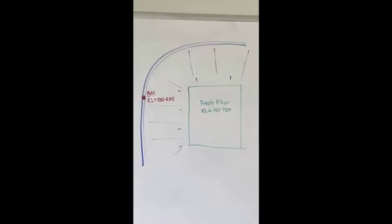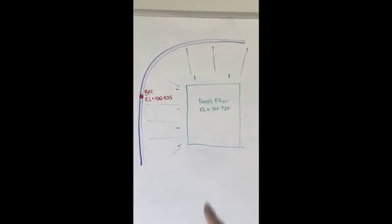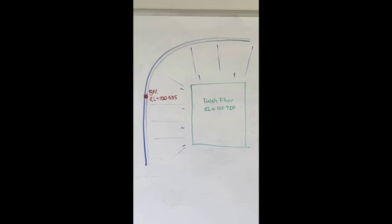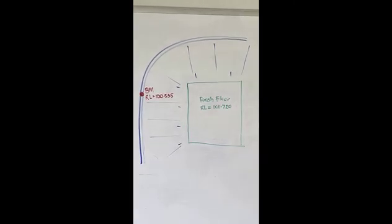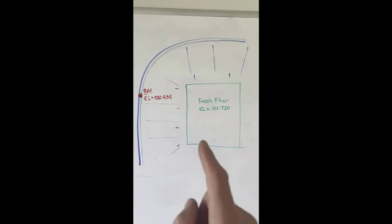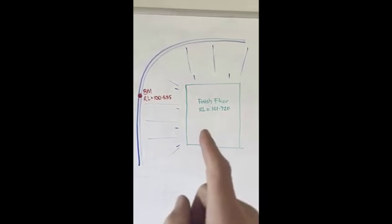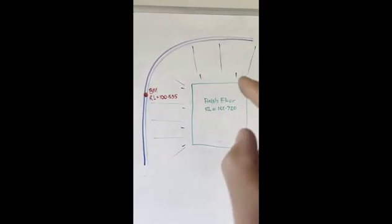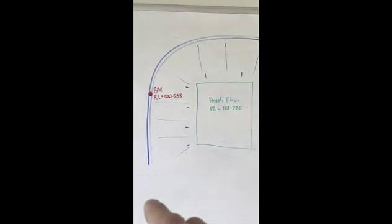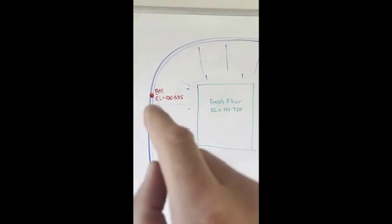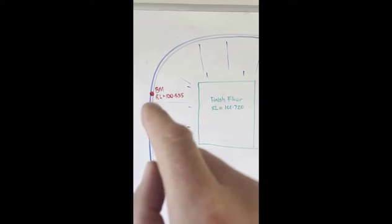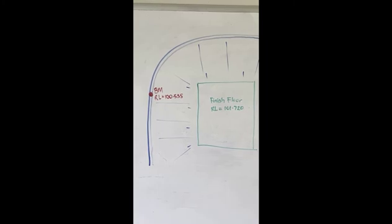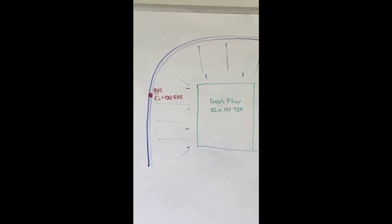Here's my job. I've got a floor pad for a new building to construct and the finished floor height — top of concrete — is 101.720 reduced level. It's quite a bit higher than the curb around the edge of the job, so there'll be some battering down to the curb. There is a curb line here and the benchmark I'm working off on the plan is on top of the curb at RL 100.535.